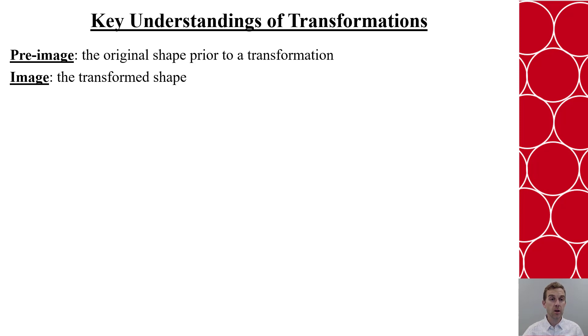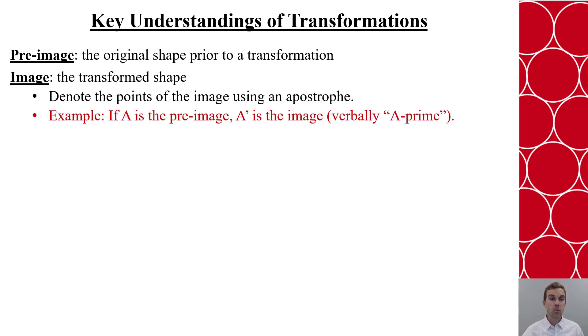These are important terms you will hear over and over again. And we denote that image by using the points with the names having an apostrophe. So if I had point A in the pre-image, A prime would be in the image. And that would be A with the apostrophe. So we just call that apostrophe, we say prime.